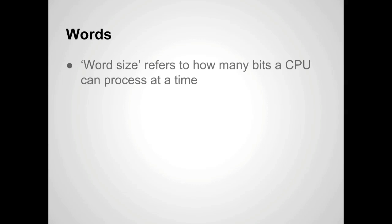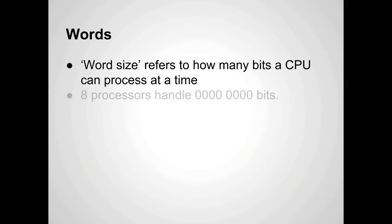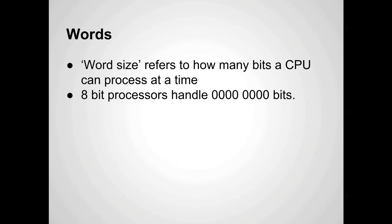Now, what we're talking about with a computer is word size — that's how many bits a CPU can process at a time. We talked about bits and bytes when we covered memory and storage: a bit is a one or a zero, on or off. It's the smallest unit of information in a computer. So an eight-bit processor can handle eight bits.